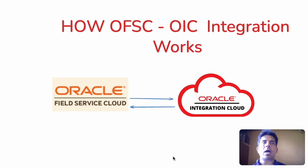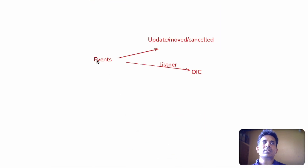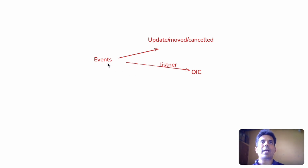We need to understand how Oracle Field Service and OIC integration works. It is not based on REST API — it is based on events. Oracle Field Service generates events for all transactions: anything like update, move, or cancel. For every transaction it will generate events. In OIC there is an Oracle Field Service adapter which will listen to these events. The event will have data including old values and new values, and we can configure a number of things at the event-level trigger field.